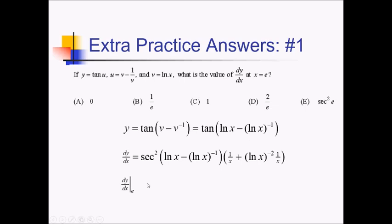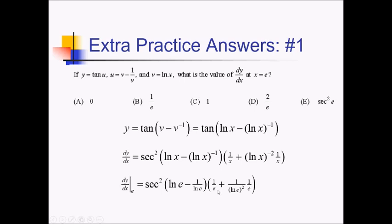So let's go ahead and plug e in. That's going to be secant squared of ln of e minus ln of e to the negative one, which I'll write as 1 over ln of e. Over here we've got 1 over e, and this is going to be 1 over ln of e squared times 1 over e. Since ln of e is just 1, this is minus 1 over 1, so this is actually zero — secant squared of zero for that first factor.